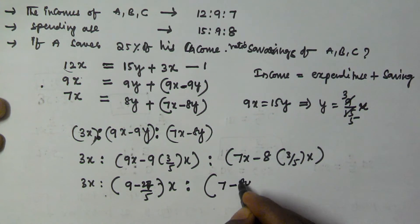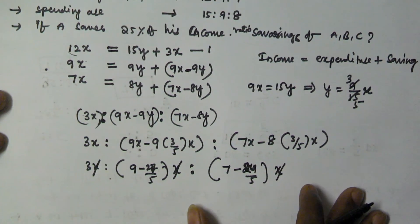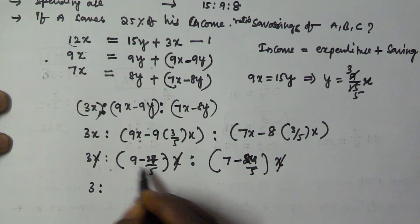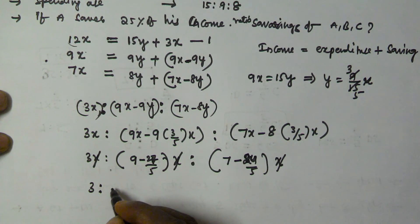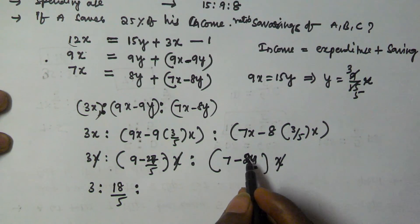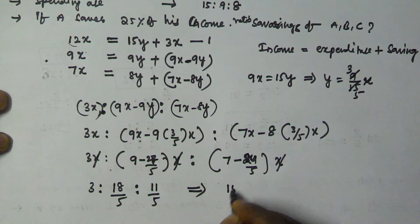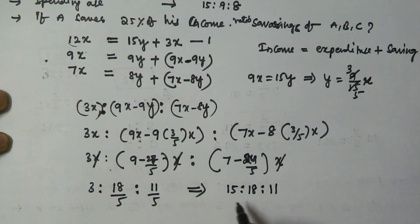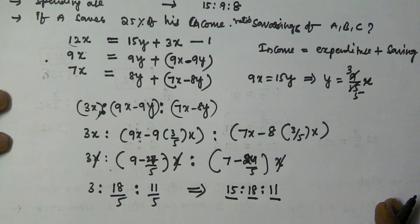Converting to fifths: A's saving is 15/5 x, B's saving is 45/5 x minus 27/5 x equals 18/5 x, and C's saving is 35/5 x minus 24/5 x equals 11/5 x. Multiplying each by 5, the ratio of savings of A, B, and C is 15:18:11. Thank you for watching this video, please subscribe to my channel.